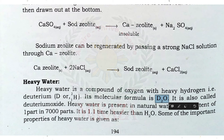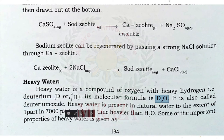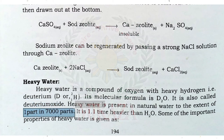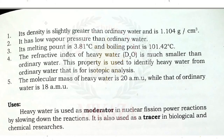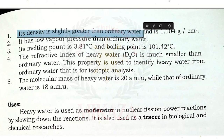Heavy water is also known as deuterium oxide. Heavy water is present in natural water to the extent of one part in 7,000. Heavy water is 1.1 times heavier than ordinary water (H₂O). Its density is slightly greater than that of ordinary water, and it has lower vapor pressure than ordinary water. Its melting point is 3.81°C and boiling point is 101.42°C.